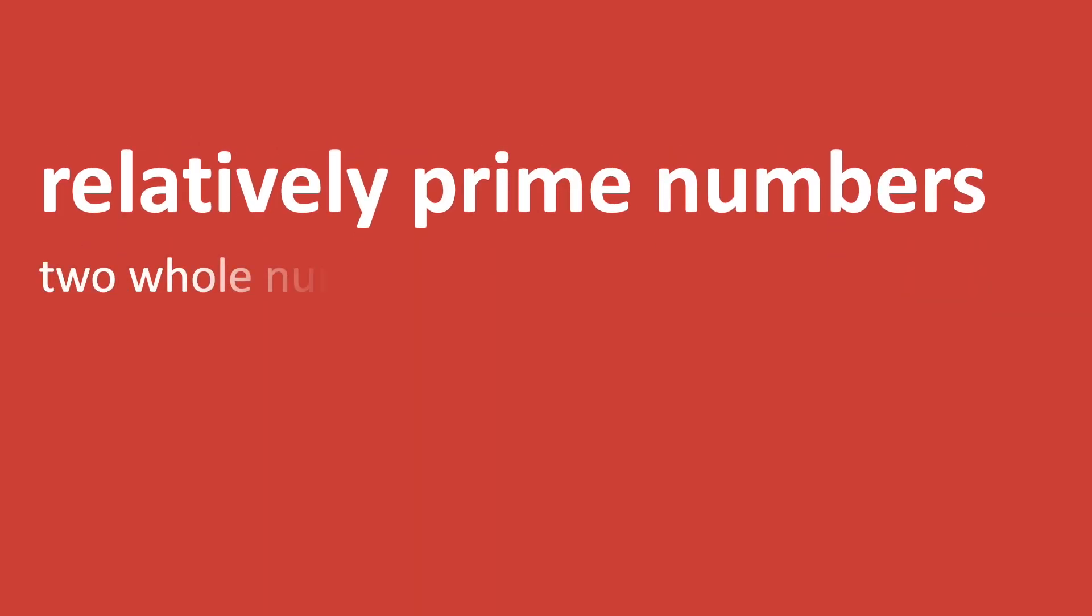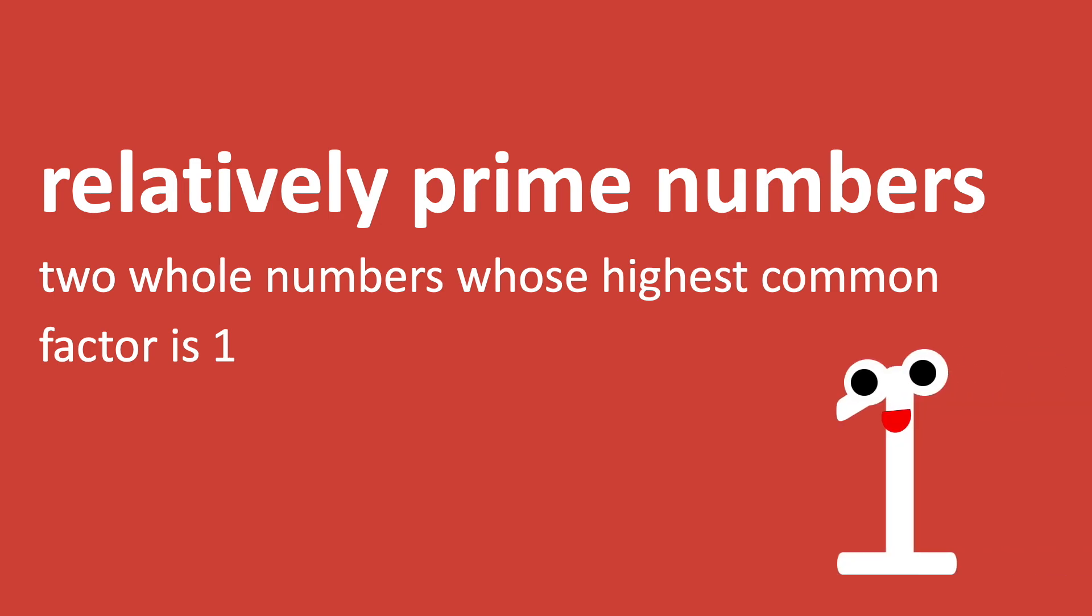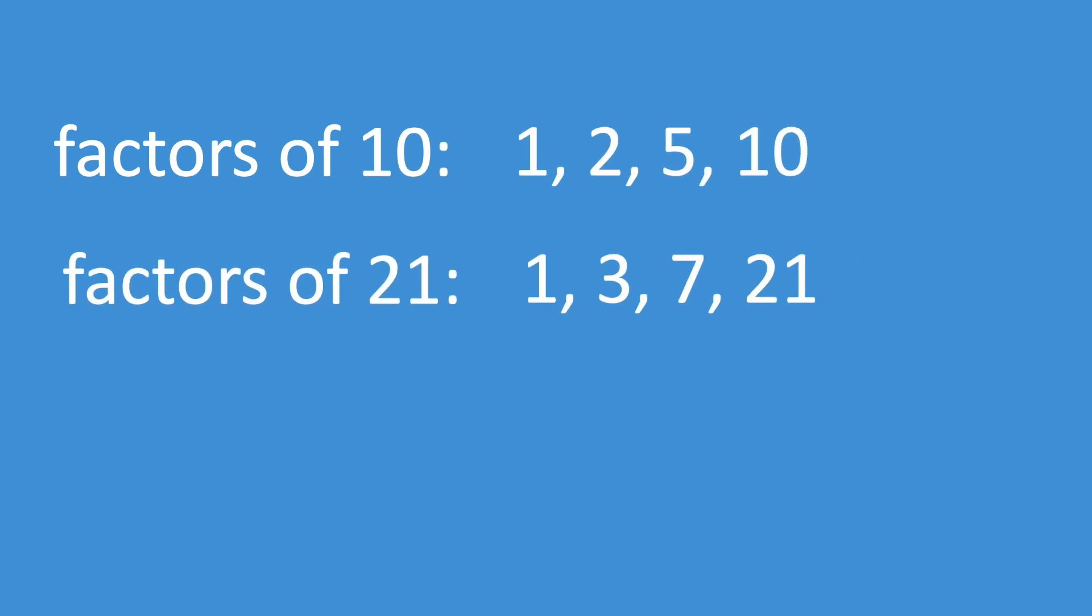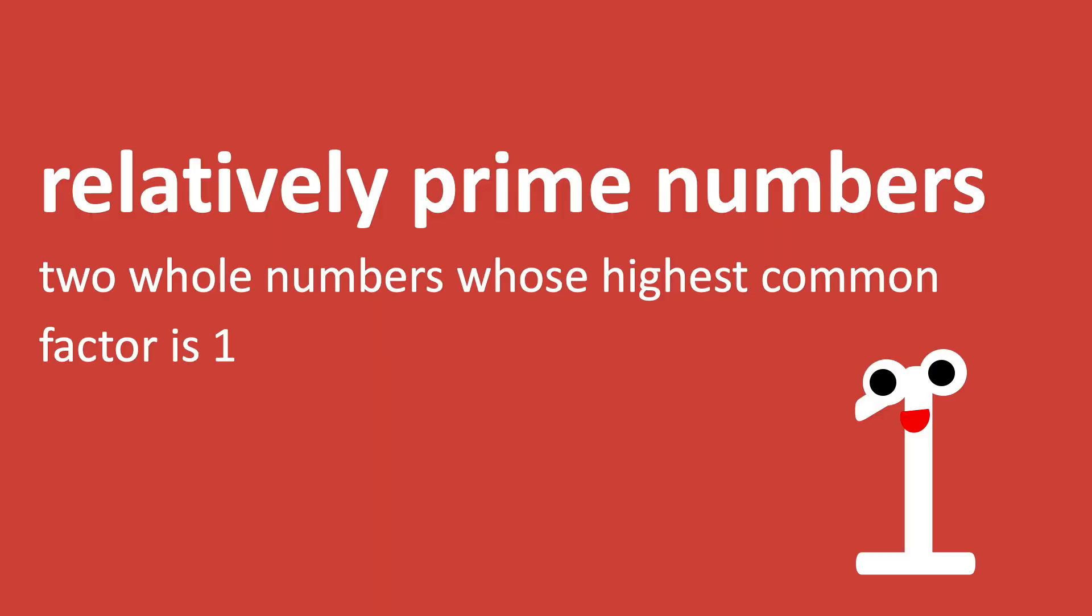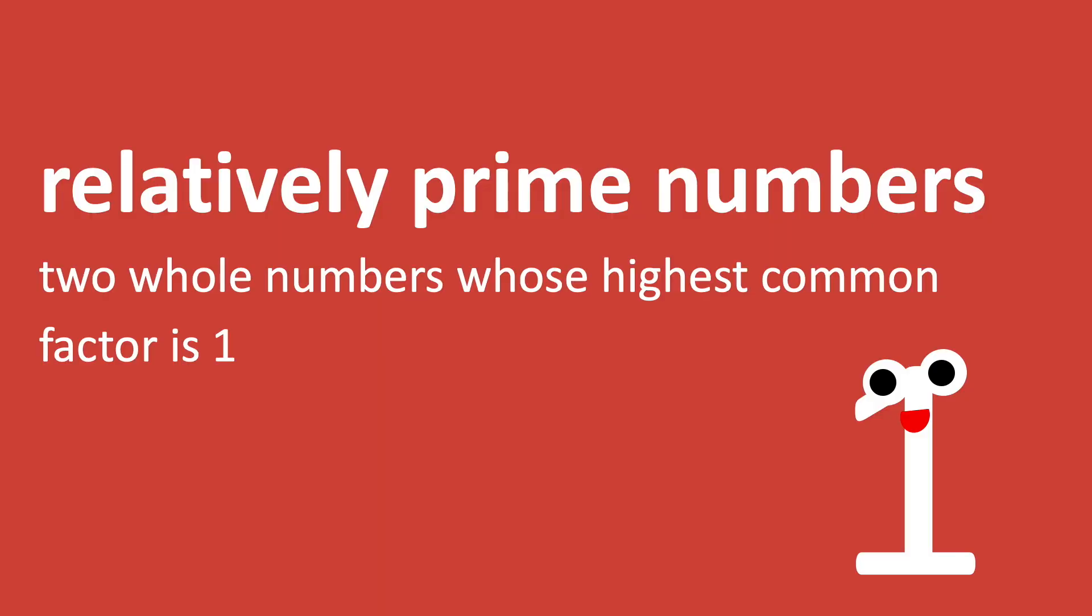A related concept that we'll touch on in this topic is that of two numbers being relatively prime. This is a relationship between two numbers based on their common factors. Essentially, every number has one as a factor, but if this is the only common factor between two numbers, then we say that they are relatively prime. So, even though neither 10 nor 21 are prime numbers, because they don't have any common factors other than 1, we say that they are relatively prime. Of course, if we wanted to avoid talking about 1, as seems to be the habit of mathematicians, we could just say that two numbers are relatively prime if they share no prime factors.